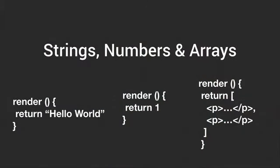We're also not stuck returning a single div anymore. Many people wrapped elements in divs or spans because you could only return one element. Now we can return pure strings, numbers, and arrays of elements. Being able to return an array is really useful and benefits server-side rendering because you're reducing payload — no extra unnecessary divs just to keep React happy.